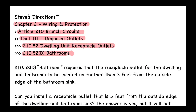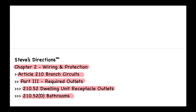Let's look at 210.52(D) together. It says 'at least one receptacle outlet' — and it's important to note that a receptacle outlet refers to the box, not the receptacle device itself. Many electricians confuse a receptacle with a receptacle outlet. It's a slight but important difference. The code states at least one receptacle outlet shall be installed in bathrooms.